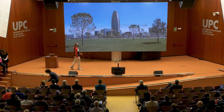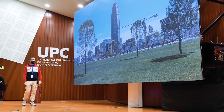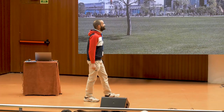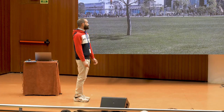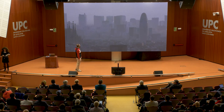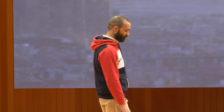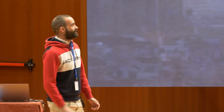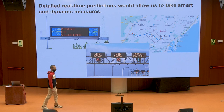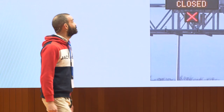Probably most of us when we think of Barcelona, this is the image that comes to our mind, but unfortunately Barcelona is not always like this. Depending on the meteorological conditions, we can have something like this. Almost 4,000 lives could be saved in the Barcelona metropolitan area if the World Health Organization recommendations were followed.